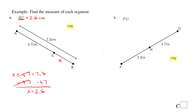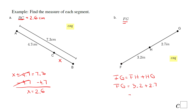Let's take a look at part B. Here we need to find the length of FG — the measure of FG. FG starts from F and goes up to G. FG is nothing else than FH plus HG. This is the segment addition postulate. So FG will be 3.2 plus 2.7. Everything is in inches. Using a calculator, that gives us 5.9 inches.